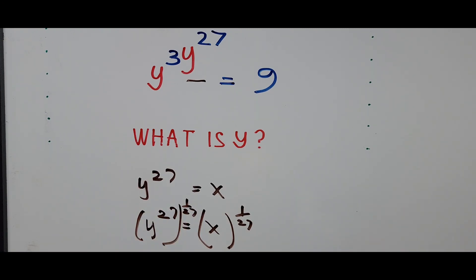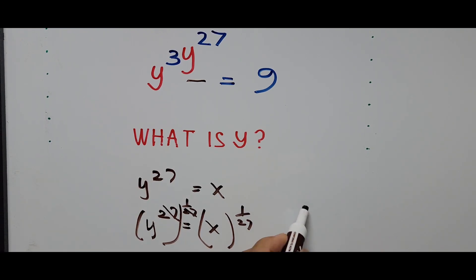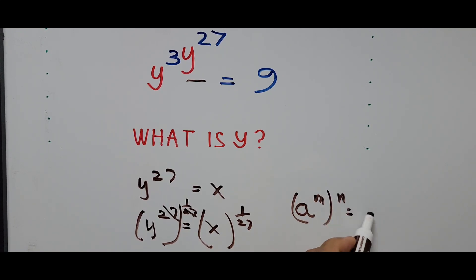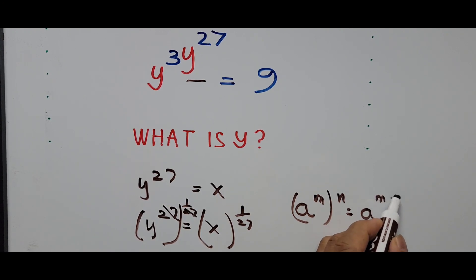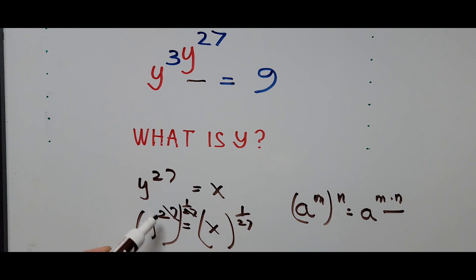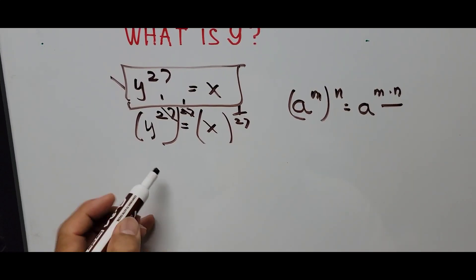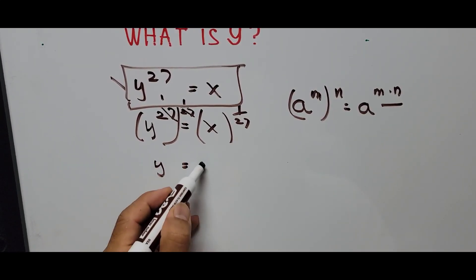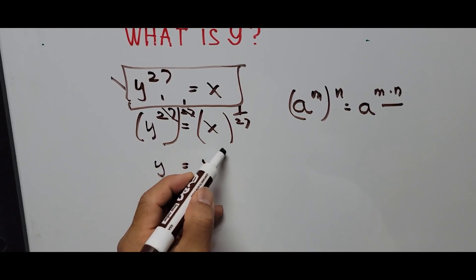What happens is we cancel the 27 using the exponent rule: a raised to m raised to n equals a raised to m times n — we multiply the exponents. So 27 divided by 27 becomes 1, and what we have now is y equals x raised to the 1 over 27 power.